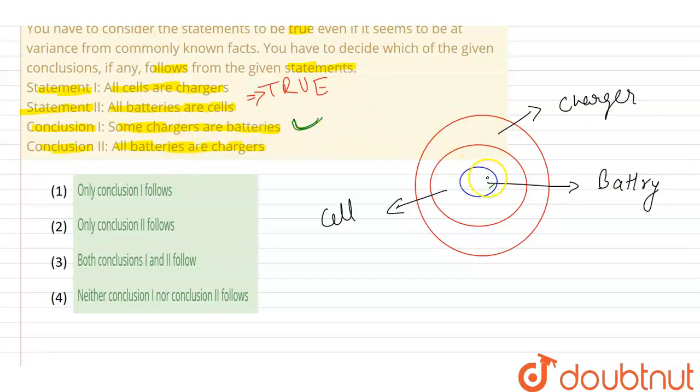Some chargers are in the batteries. Then what is all batteries are in the charger? All battery is in the battery. When all battery is in the cell and all cells is in the charger, it's clear all battery is the charger. So both are followed, both are followed.